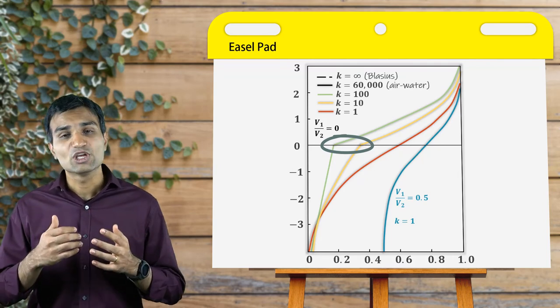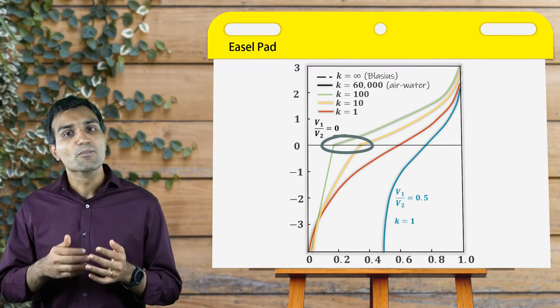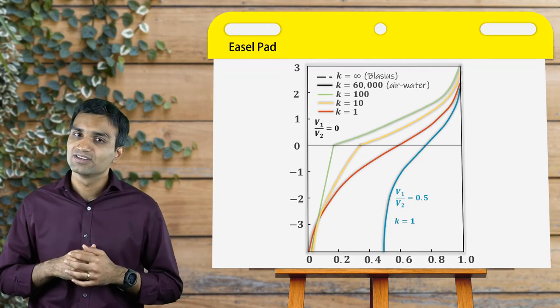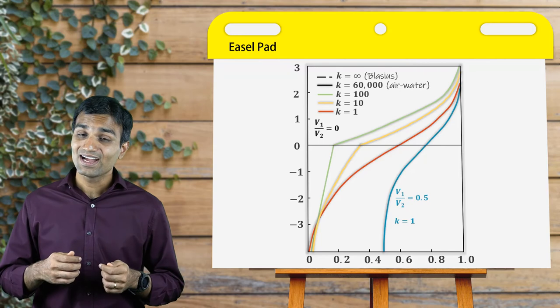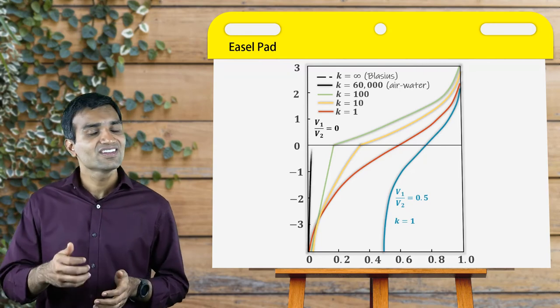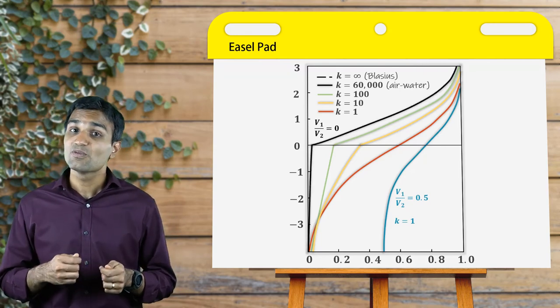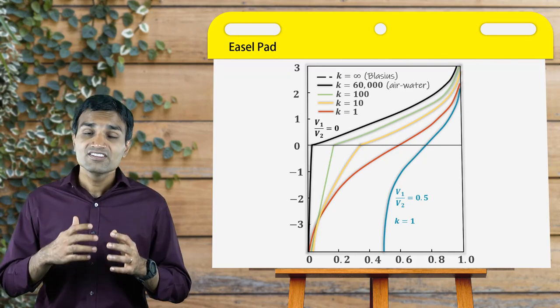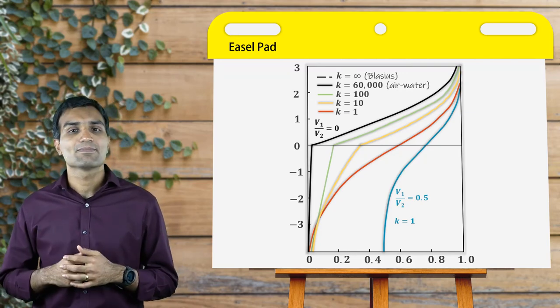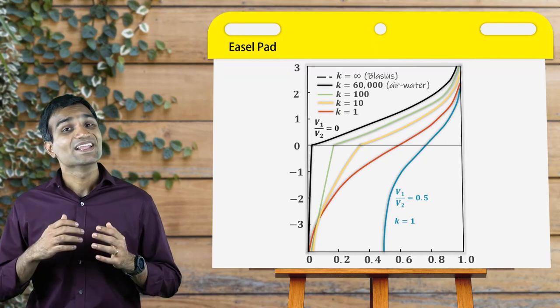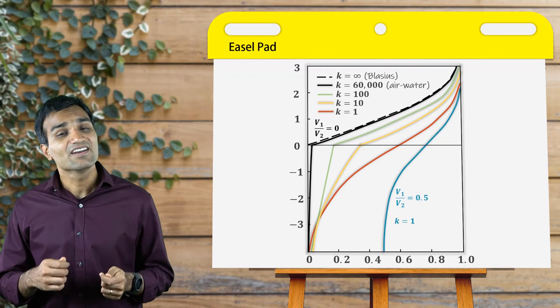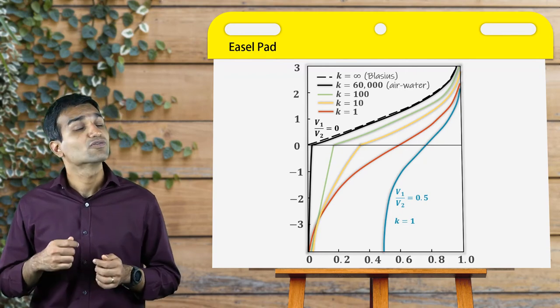The larger the value of k, the more the deviation from a typical smooth S-shaped curve. In fact, for k equal to 60,000, which is the value based on air and water, the discontinuity becomes much more apparent. When k tends towards infinity, we arrive at the Blasius solution for the flat plate.